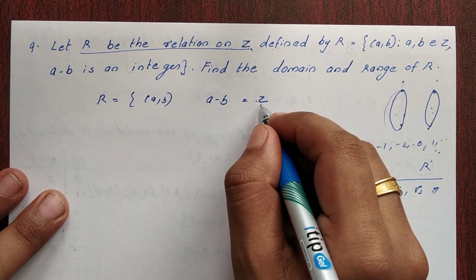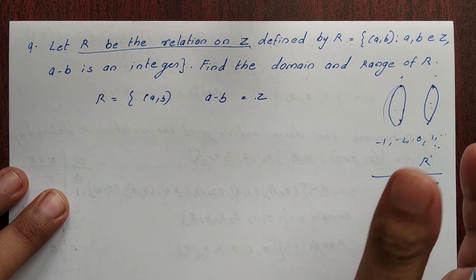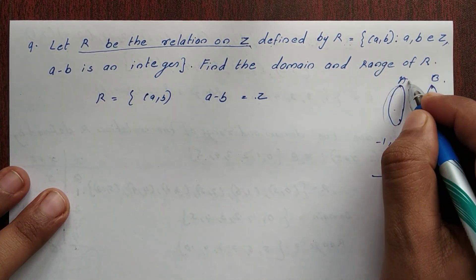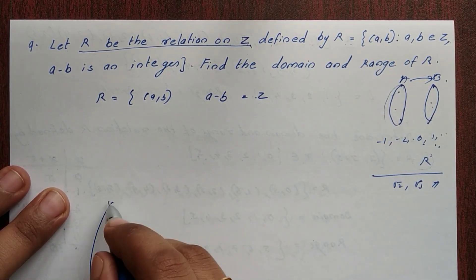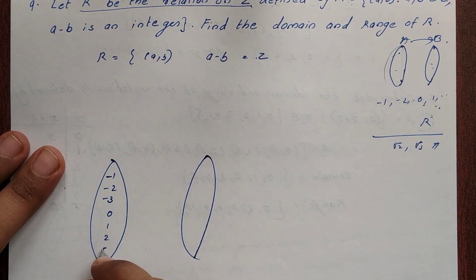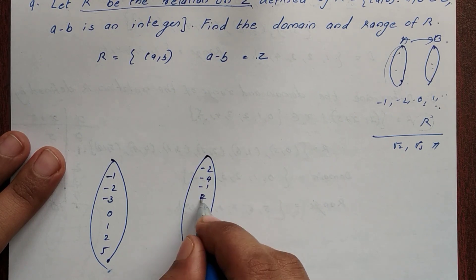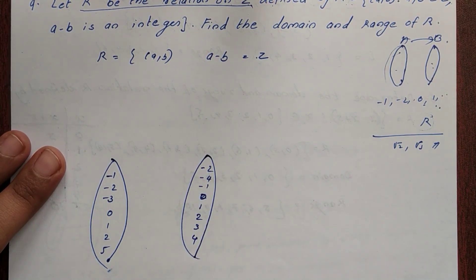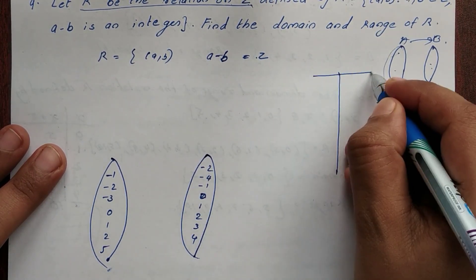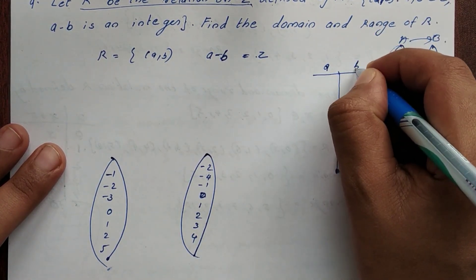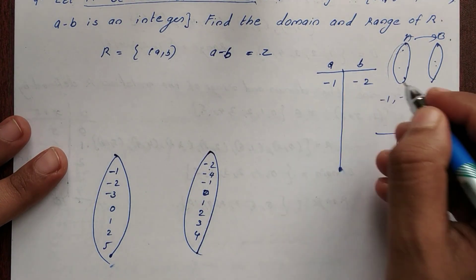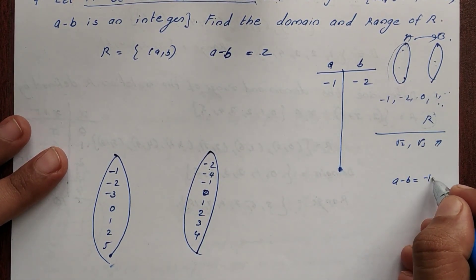A minus B is an integer, meaning it can be a negative value, zero, or a positive value. For example, consider a = -1 and b = -2. Then a minus b equals -1 minus (-2), which equals plus 1 — that is an integer. Also, a = -2 and b = -4 gives a minus b equals 2, also an integer.